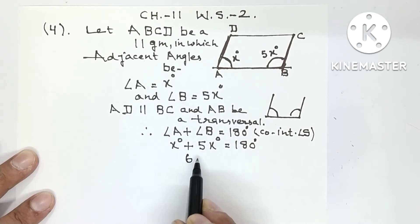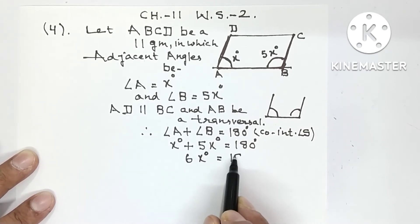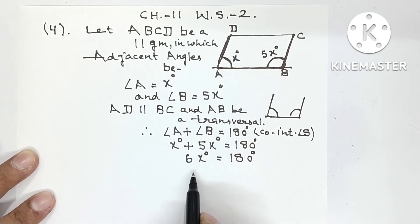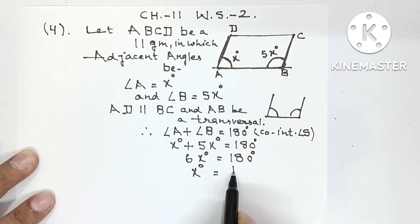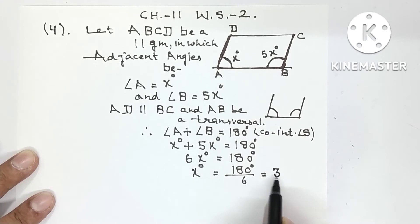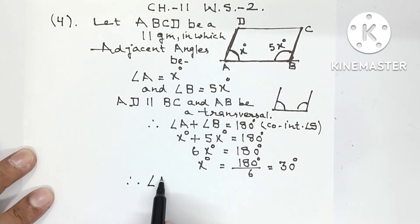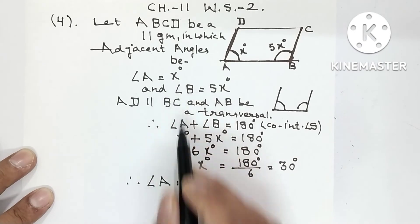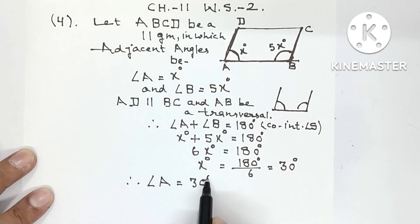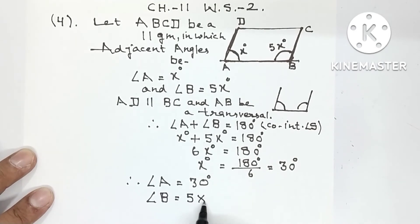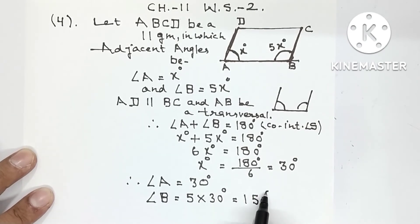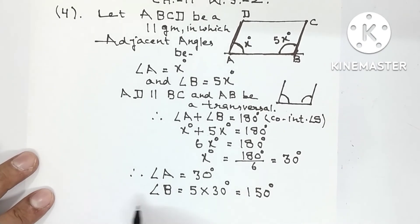5X plus 1X = 6X degrees = 180 degrees, so X = 180/6 = 30 degrees. Therefore, angle A = X = 30 degrees. Angle B = 5X = 5 × 30 = 150 degrees. Now that we have A and B, finding C and D is easy.